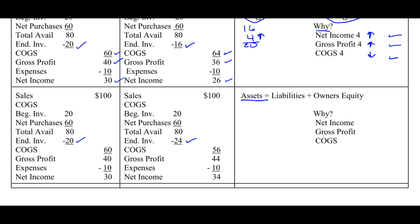Well, first of all, my inventory was shown at $24 when it should have been shown at $20. So my assets are overstated and need to be brought down by $4. If this side of my equation needs to be brought down by $4, then something on this side needs to as well. Liabilities are okay, so if one side is too big by $4, the other side needs to be brought down by $4.